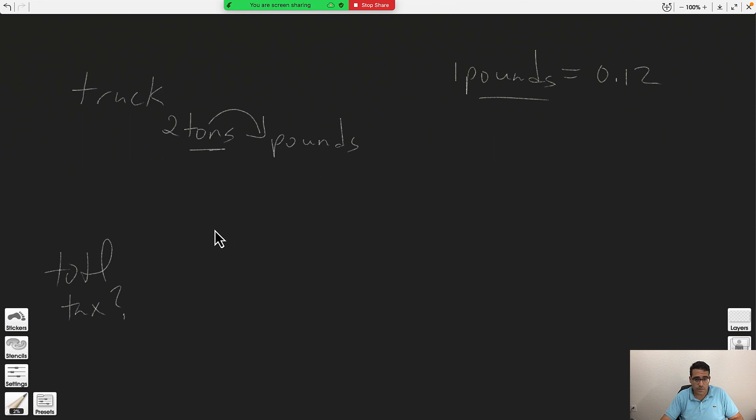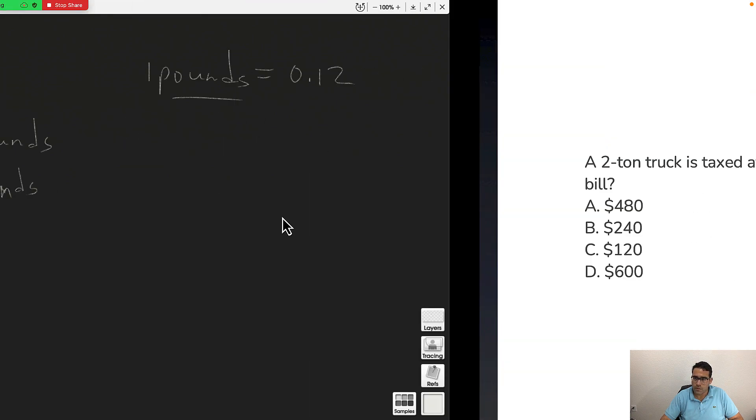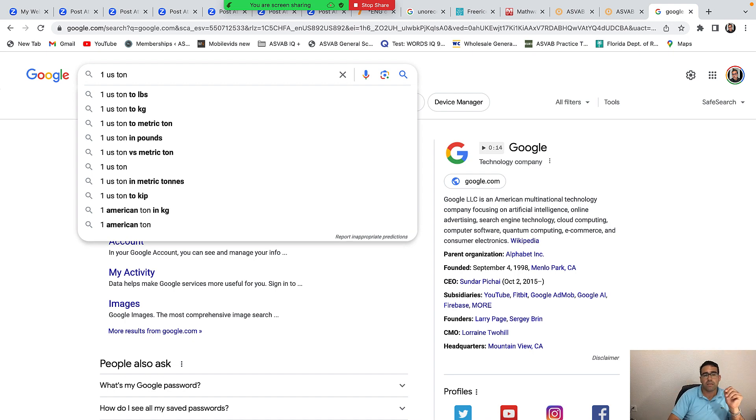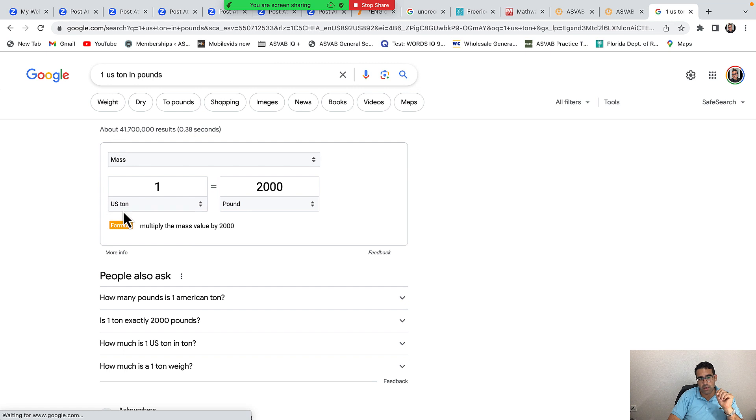If you're a student, you should know that in our formula document it says that one ton is two thousand pounds. One U.S. ton is two thousand pounds.